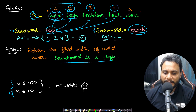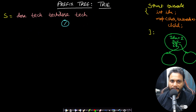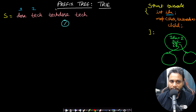This problem is a very good problem to get started with Trie, so I hope you have already seen my video on that. In this case, our given string is, let's say, 'dose tech techdose' and 'tech.' The structure of the Trie node will store the index of the word — that means the first occurrence of the index. So if I have 'tech' two times, then this is index 1, index 2, 3, and 4. If I store 'tech,' I will always be storing index 2 for 'tech.'